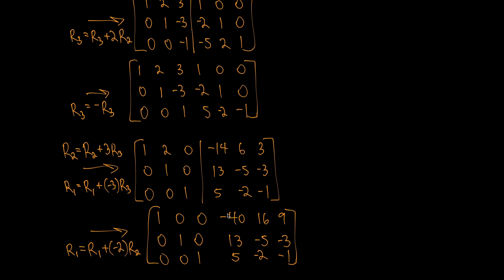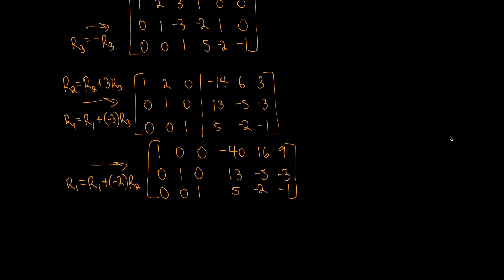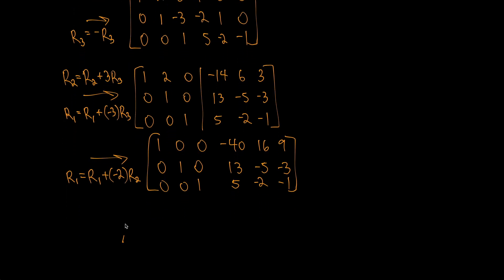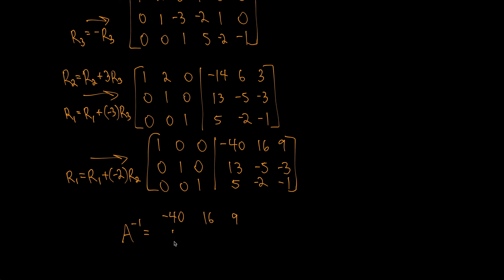The left side is now the identity matrix. So A inverse is the matrix on the right: negative 40, 16, 9 in the first row; 13, negative 5, negative 3 in the second row; and 5, negative 2, negative 1 in the third row.